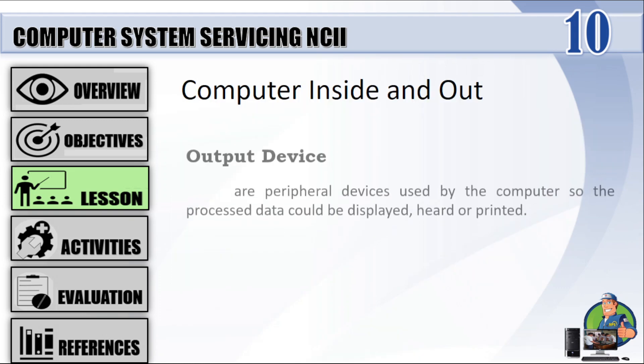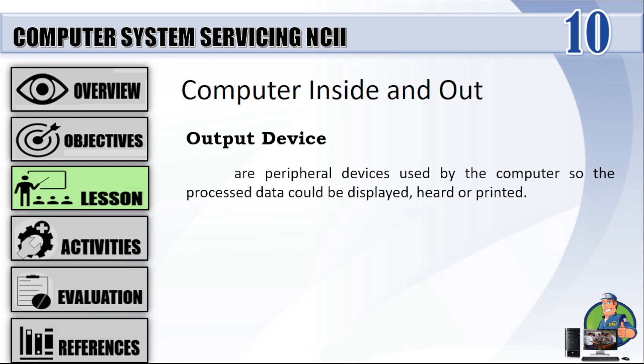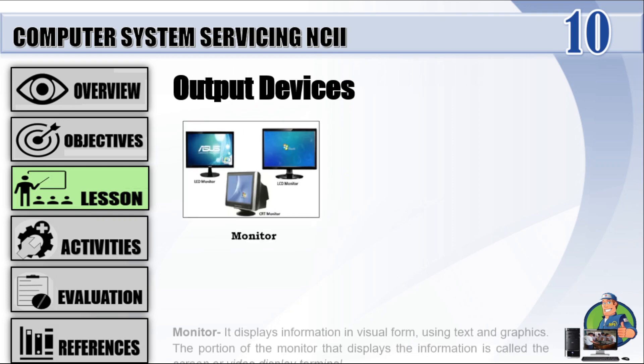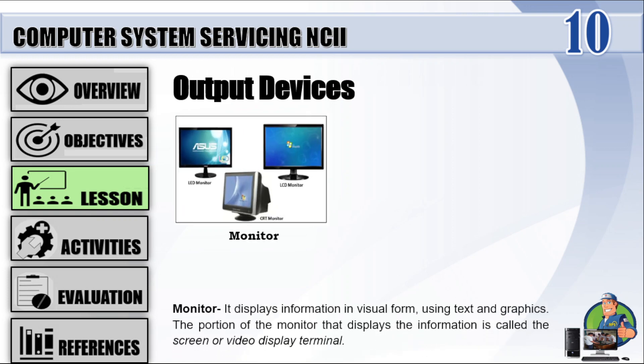Output Device: Output devices are peripheral devices used by the computer so that processed data can be displayed, heard, or printed. A monitor displays information in visual form using text and graphics. The portion of the monitor that displays the information is called the screen or video display terminal. Types of monitors: CRT monitor, LCD monitor, and LED monitor.